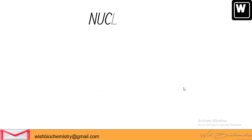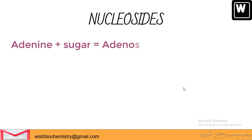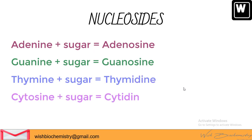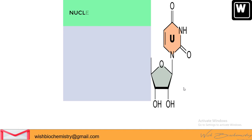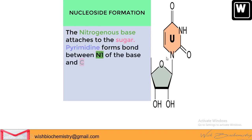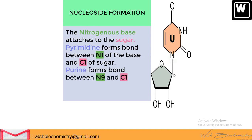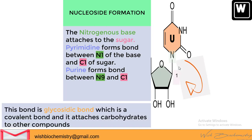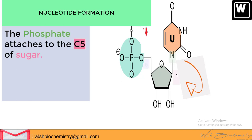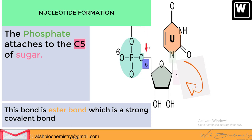Different bases combine with sugar to form their respective nucleosides: adenine forms adenosine, guanine forms guanosine, thymine forms thymidine, and cytosine forms cytidine. The nitrogenous base attaches to the sugar via a glycosidic linkage — C1 of the sugar attaches to N1 of a pyrimidine base, or to N9 of a purine base. After the nucleoside is formed, the phosphate attaches to carbon number 5 of the sugar forming the nucleotide via an ester bond.